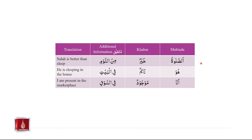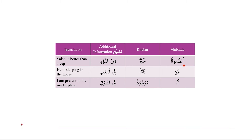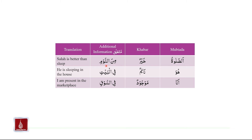Let us look at some examples to understand the concept of mutallik or additional information. As-salatu khayrun minan-naumi — Salah is better than sleep. In this example, as-salatu meets the criteria for muptada: it is marfoo and definite. Khayrun meets the criteria for khabar. Minan-naumi, which translates to 'than sleep', is a murakkab-e-jaari — a harf-e-jar followed by an ism that is majroor. Minan-naumi plays the role of mutallik and gives us additional information about the khabar, which is khayrun.